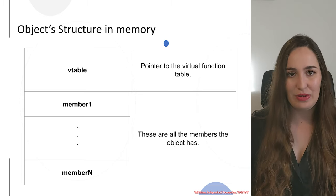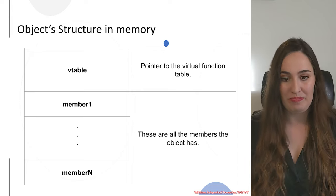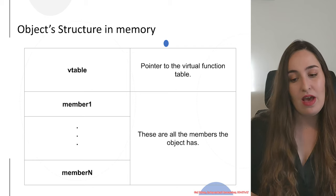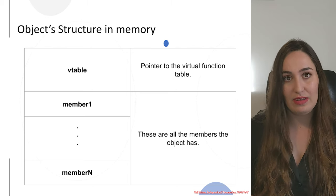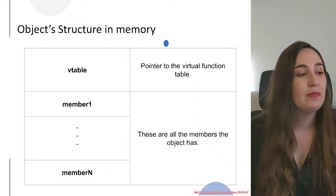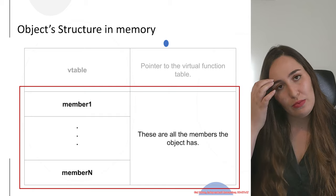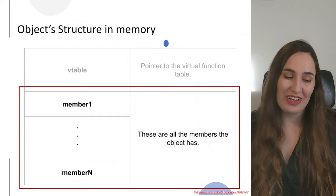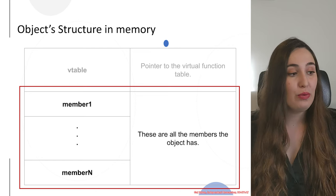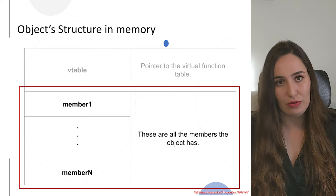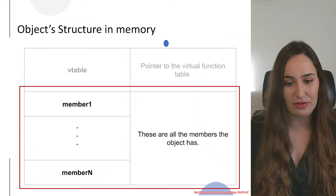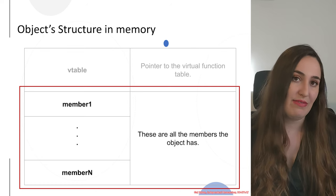First we need to understand how an object looks like in memory. To do that, we need to distinguish between two types of objects: one that inherits or defines virtual functions, and one that doesn't. In the case where an object doesn't have any virtual functions, we would see the members of the object stored in the object's structure one after another inside the constructor, and we would not see any Vtable.